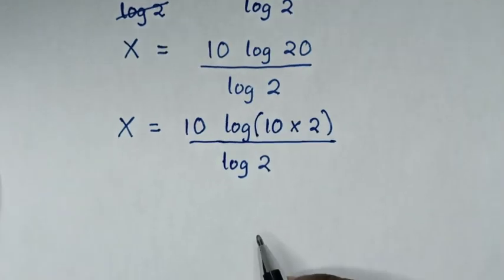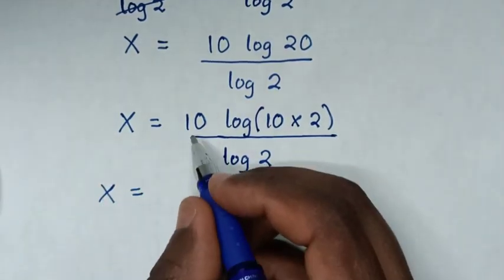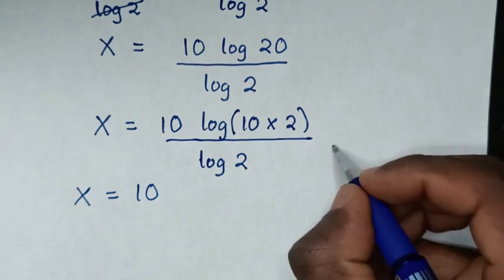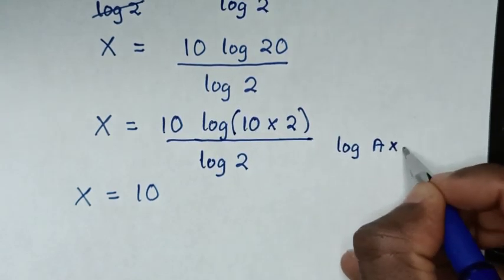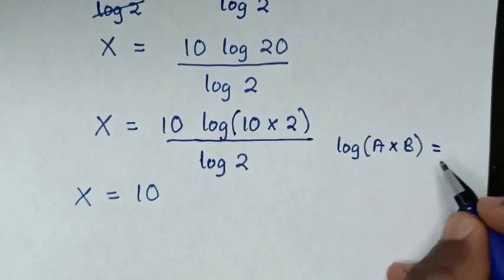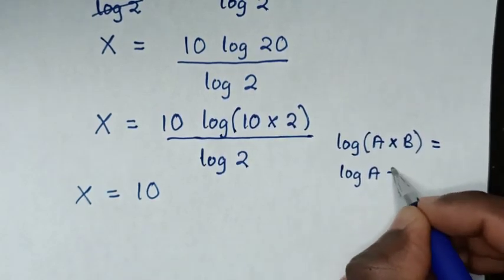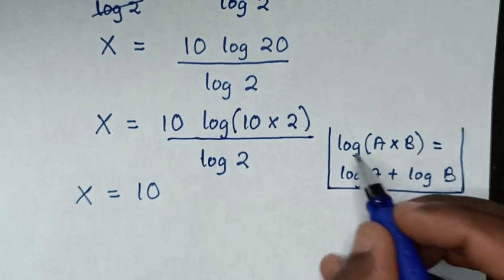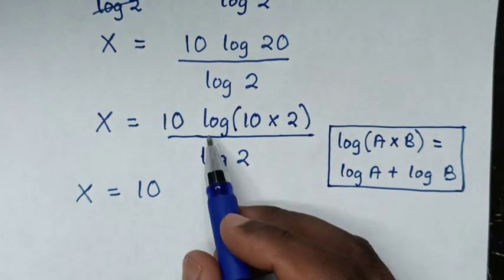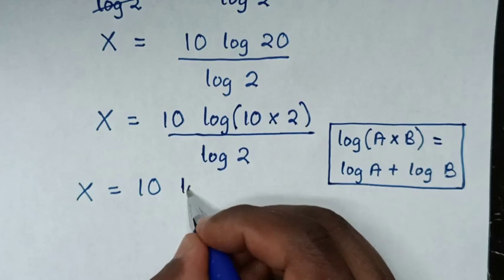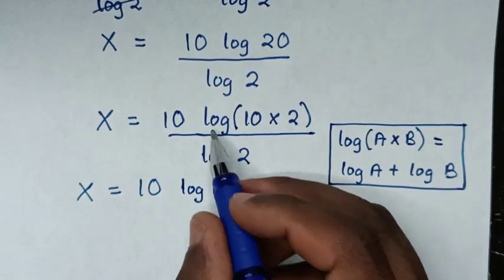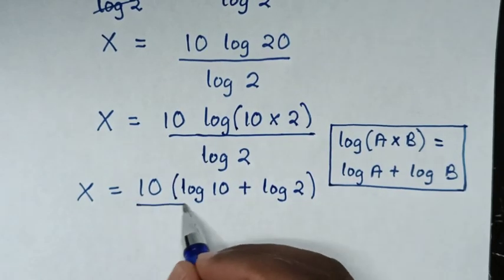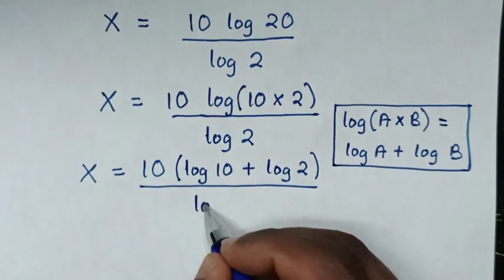Then in the next step it will be x is equal to 10. From here log of 10 times 2 — we'll apply the logarithmic rule which is log of a times b is equal to log of a plus log of b. So in here it will be log of 10 plus log of 2, in brackets, then over log of 2.